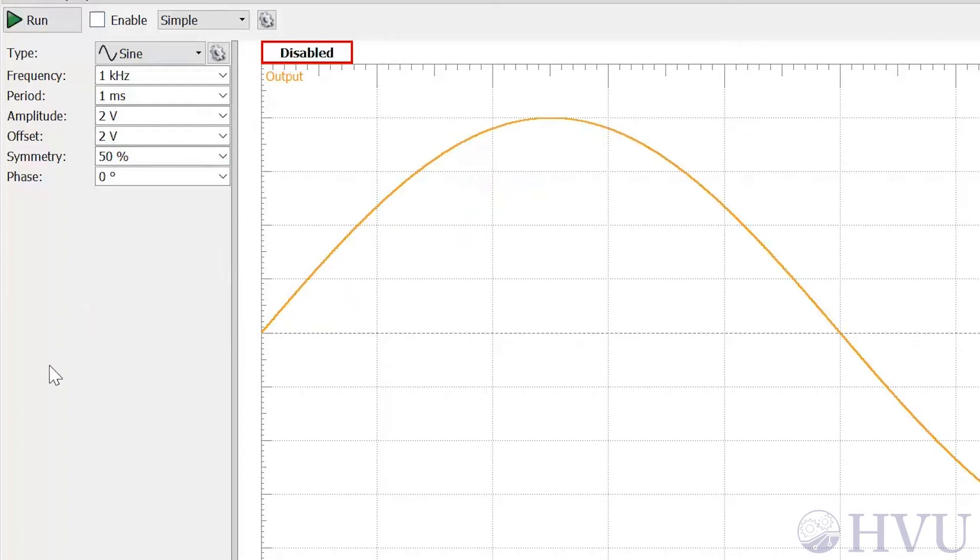Before I turn on power using the waveform generator, I want to give an overview of the roles of the run and the enable boxes before I demonstrate those options.